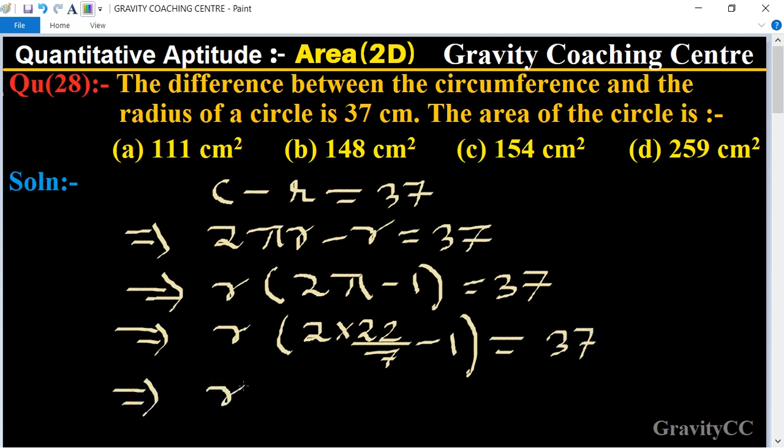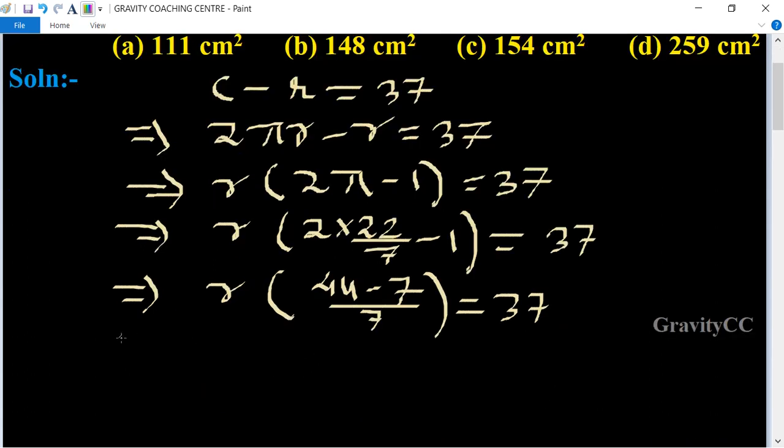This implies that r(44 - 7)/7 = 37, which gives us r(37/7) = 37.